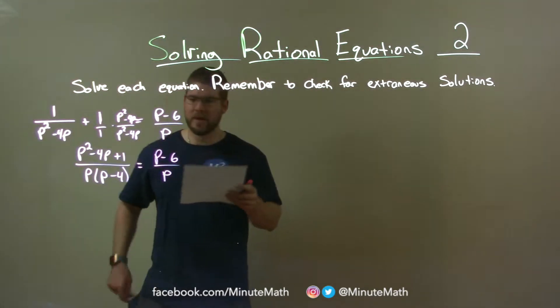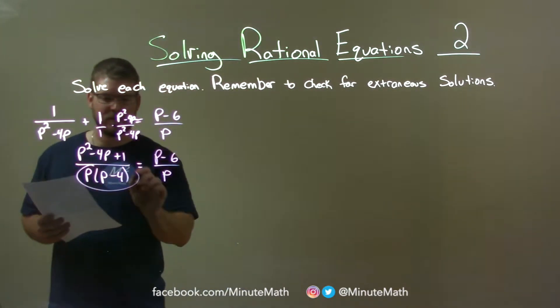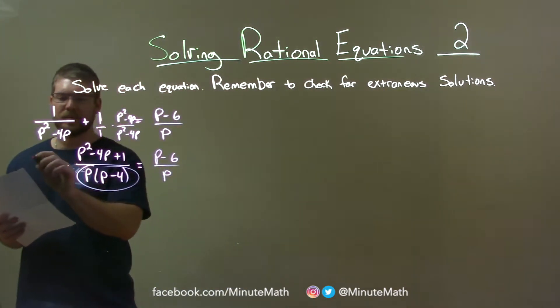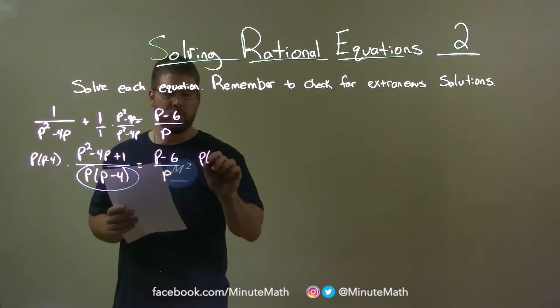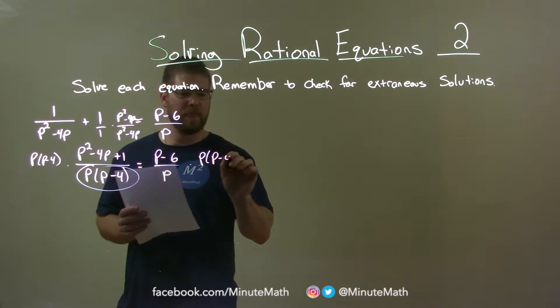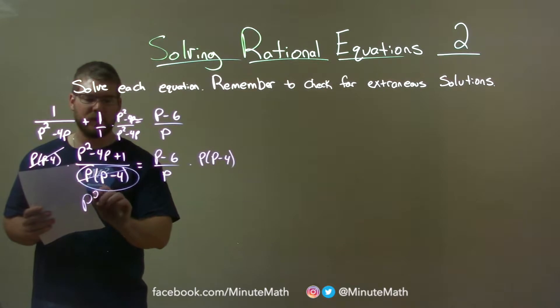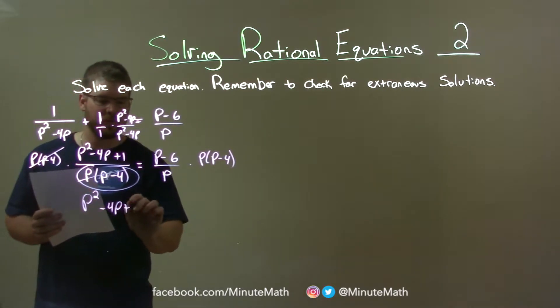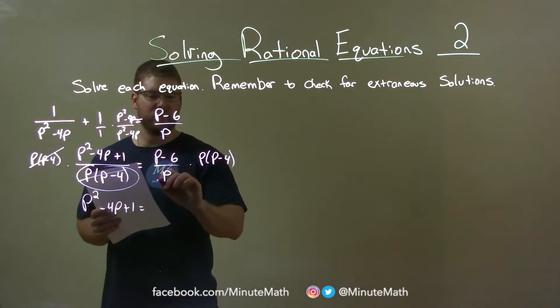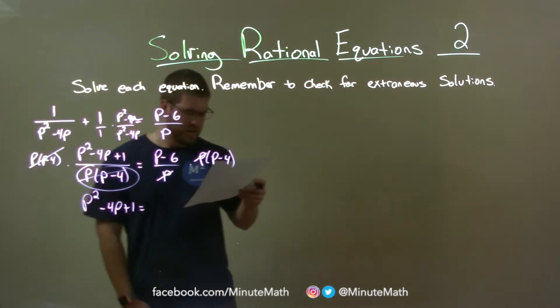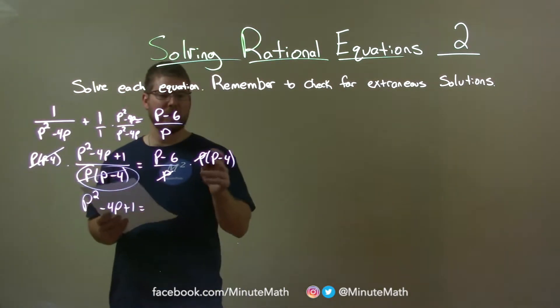Now this is when I'm going to take this here and multiply it to both sides. So now I have p times p minus 4. That's why I kind of saw ahead and broke that up. You didn't have to do it right away, but it helps there. These cancel. I have p squared minus 4p plus 1 equals these p's cancel.